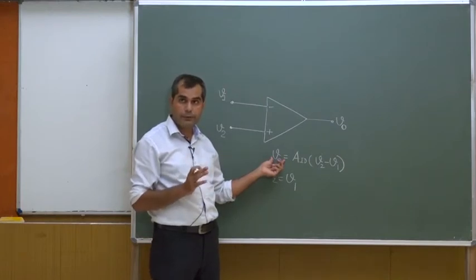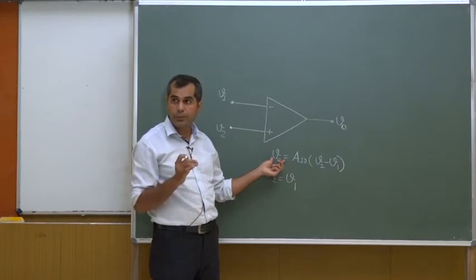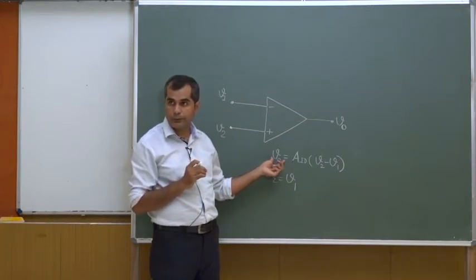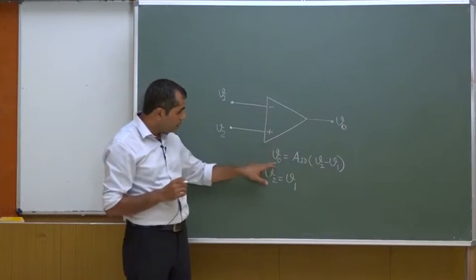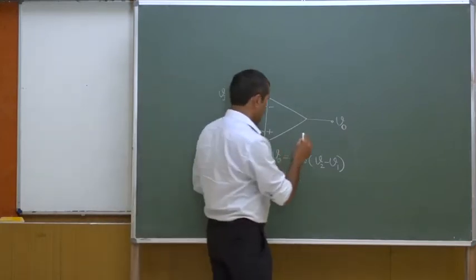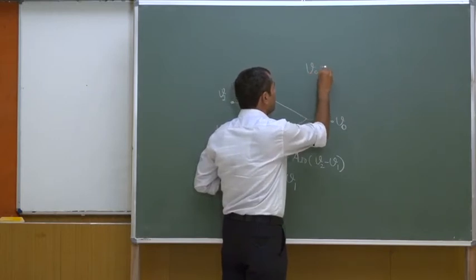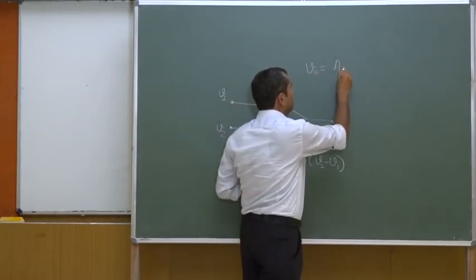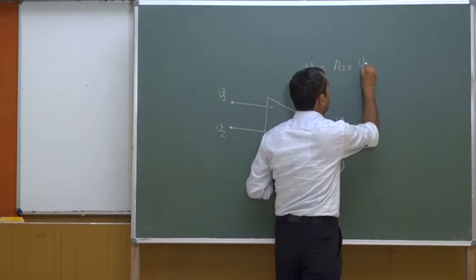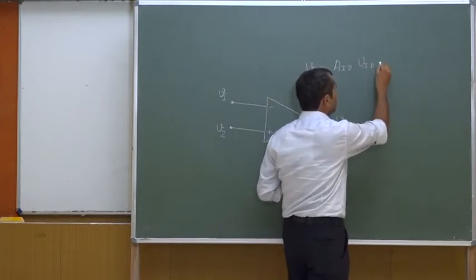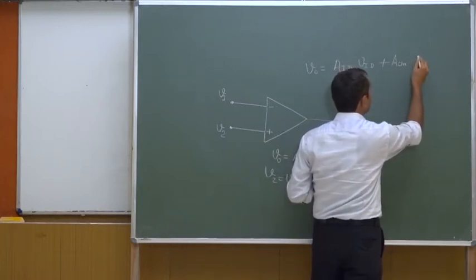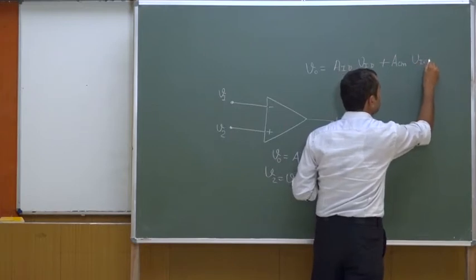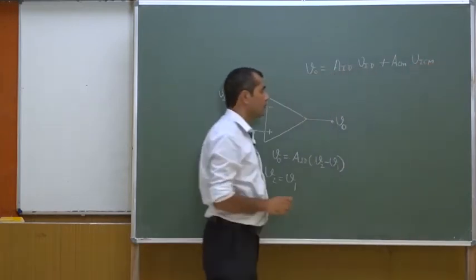Why does it happen? It happens because of the common mode signal present at the two input terminals. A general expression for V_out would be: V_out equals A_id (the differential mode gain) times V_id (the differential input), plus A_cm (the common mode gain) times V_icm (the common mode input).